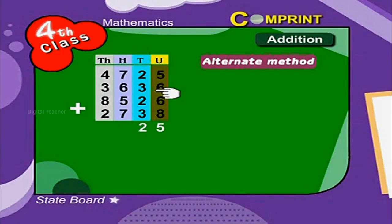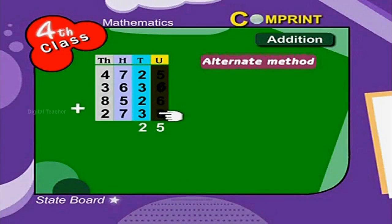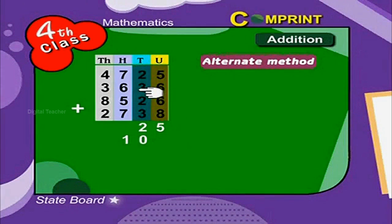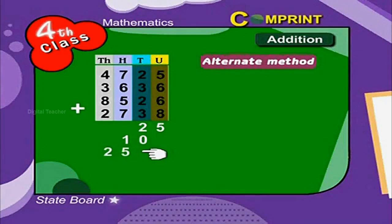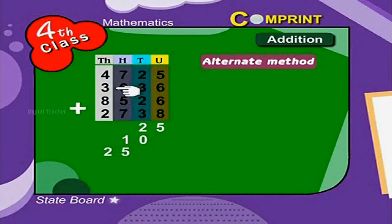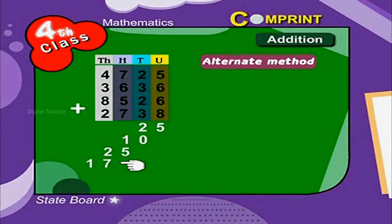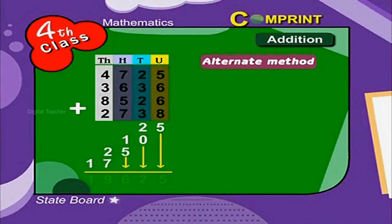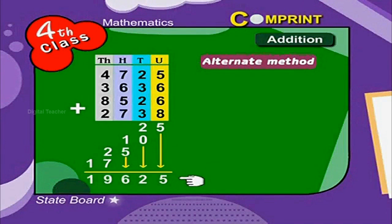Adding the 10's: 2 plus 3 plus 2 plus 3 is equal to 10. Adding the 100's: 7 plus 6 plus 5 plus 7 is equal to 25. Now adding the 1000's: 4 plus 3 plus 8 plus 2 is equal to 17. Find the sum now. That is 19,625.